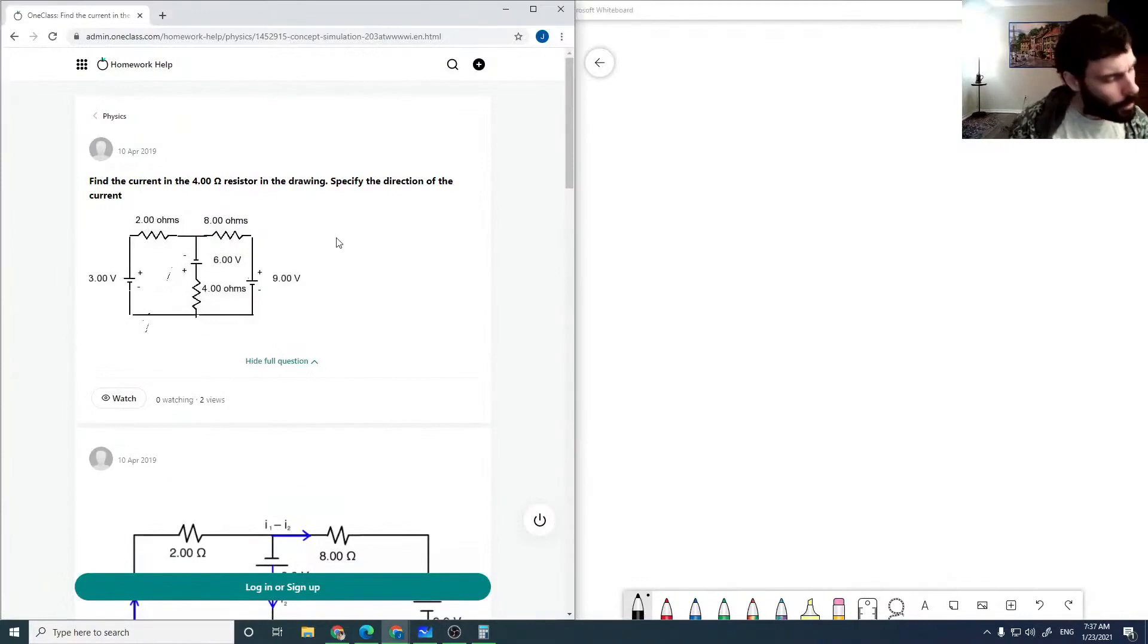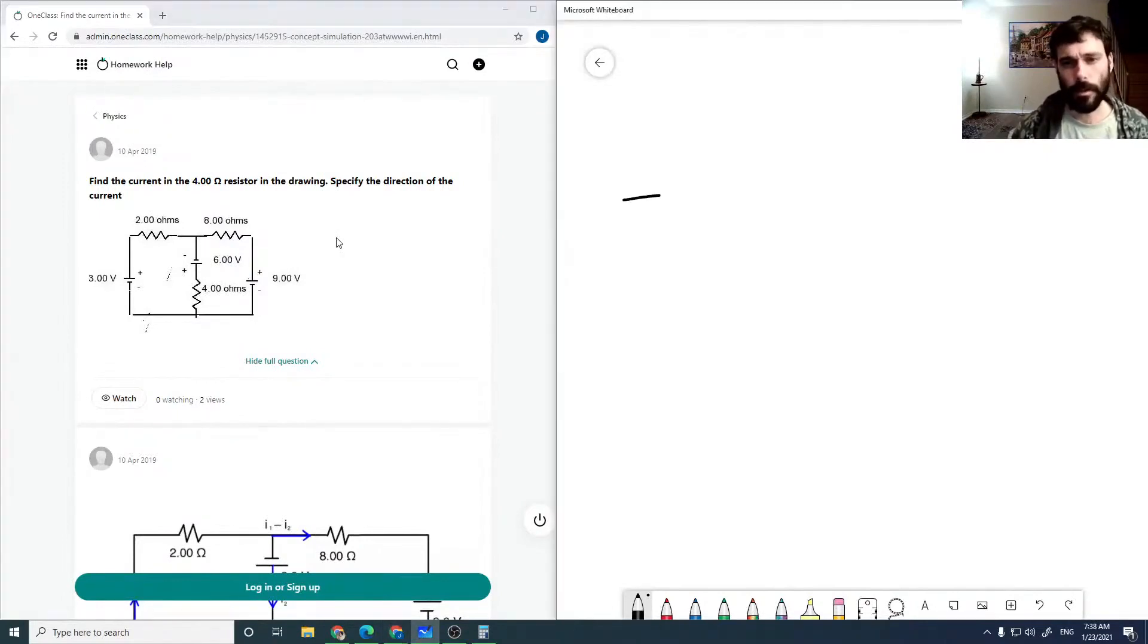Okay, so now we're asked to find the current in the 4 ohm resistor. Alright, so we've got a multiple battery situation here.